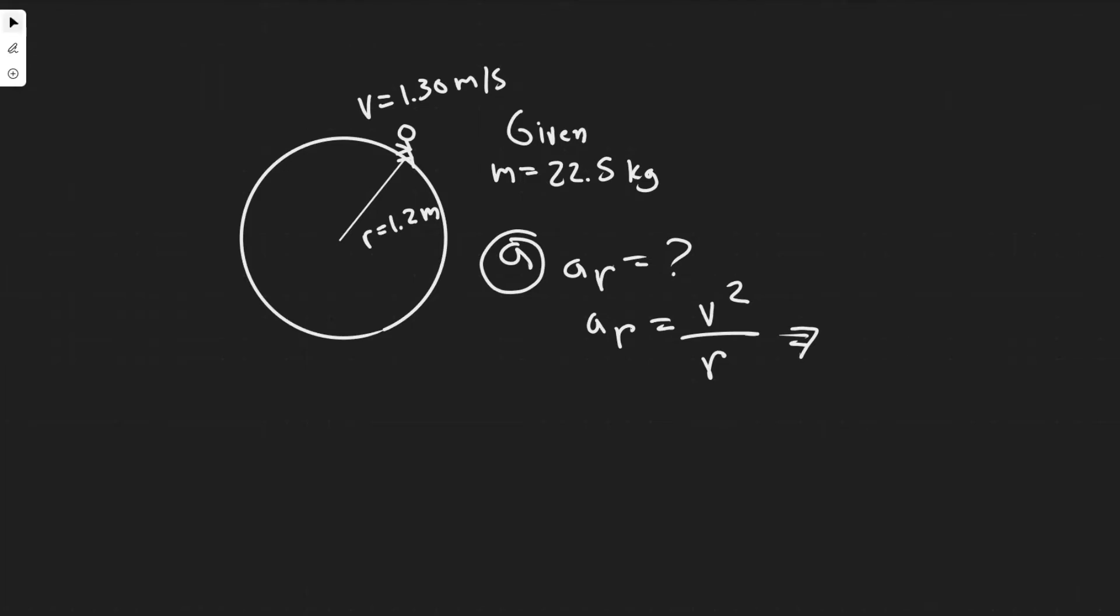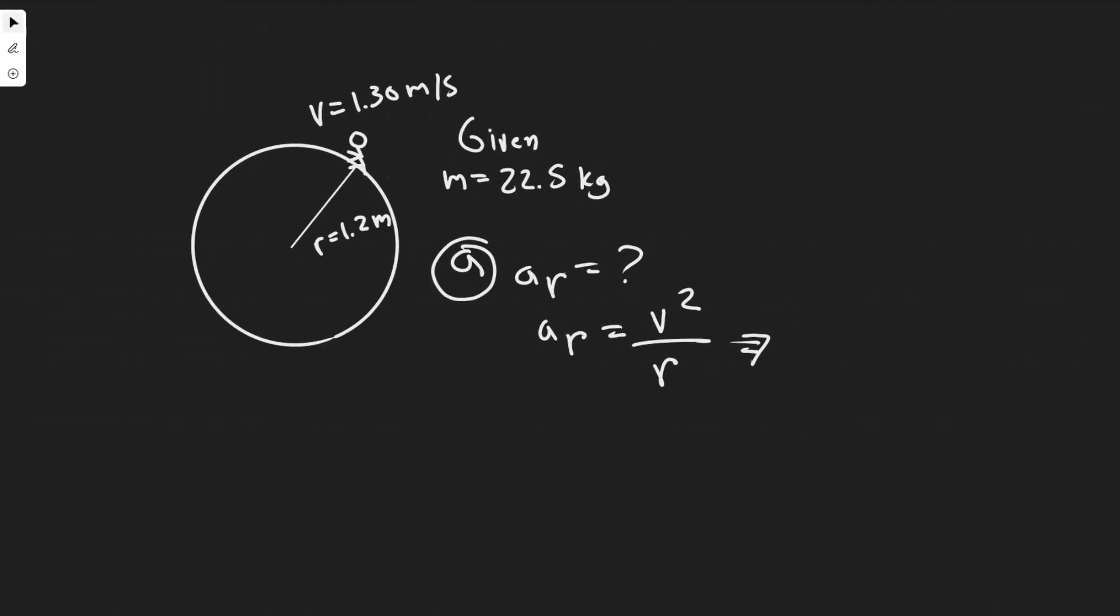So both of these things were actually just given, so it's just a matter of plugging it in. We know the velocity and we know the radius, they're in the correct units. So centripetal acceleration is going to be 1.30 squared divided by 1.2,